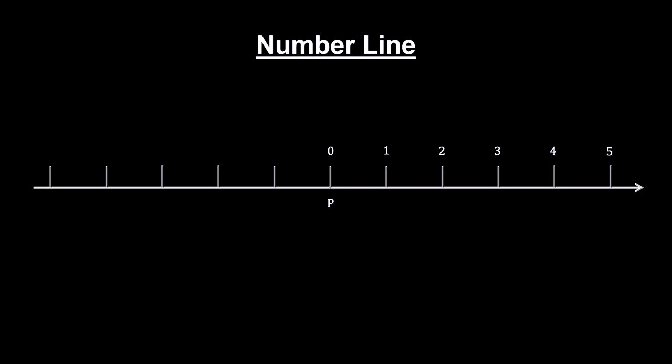These points correspond to the negative numbers where the leftmost point in the first segment represents minus 1, the leftmost point in the second segment represents minus 2, and so forth. This is the basic number line for the set of all integers.